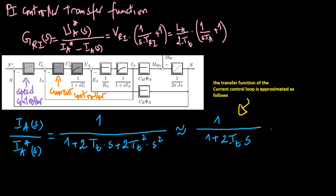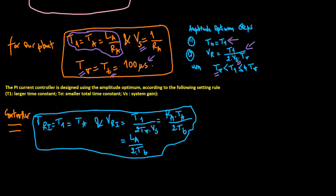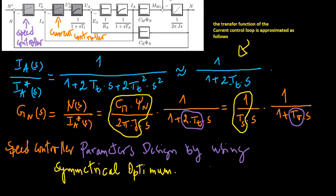Together with the transfer function of the mechanics, the following system function must be controlled. The PI current controller was designed in the last video using the amplitude optimum. For speed control, the so-called symmetrical optimum is used.